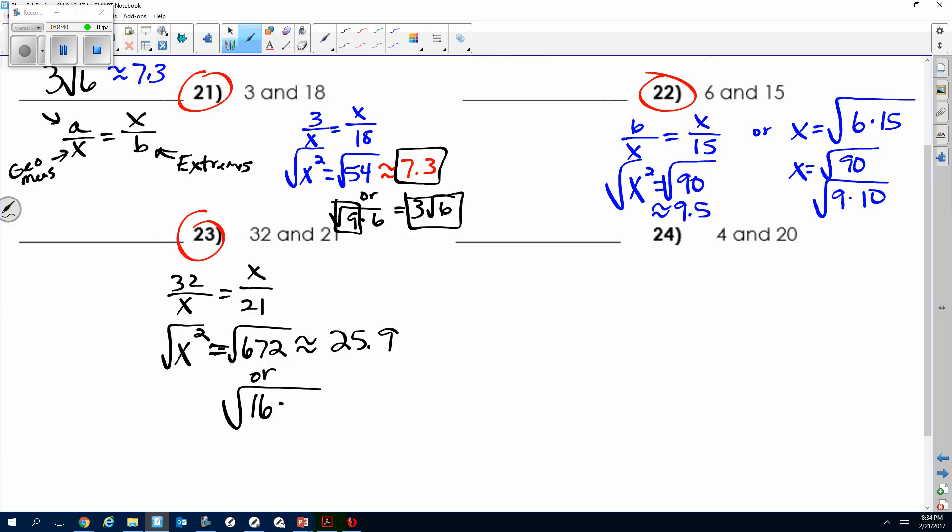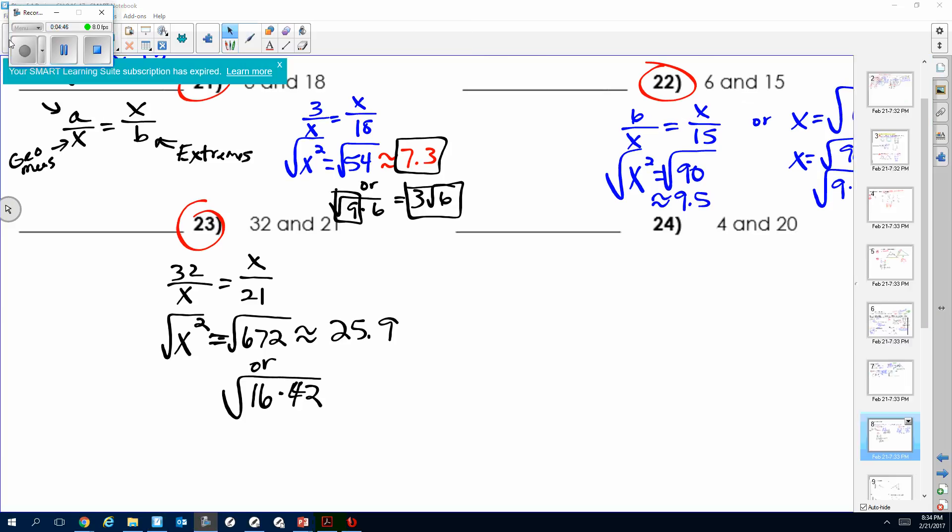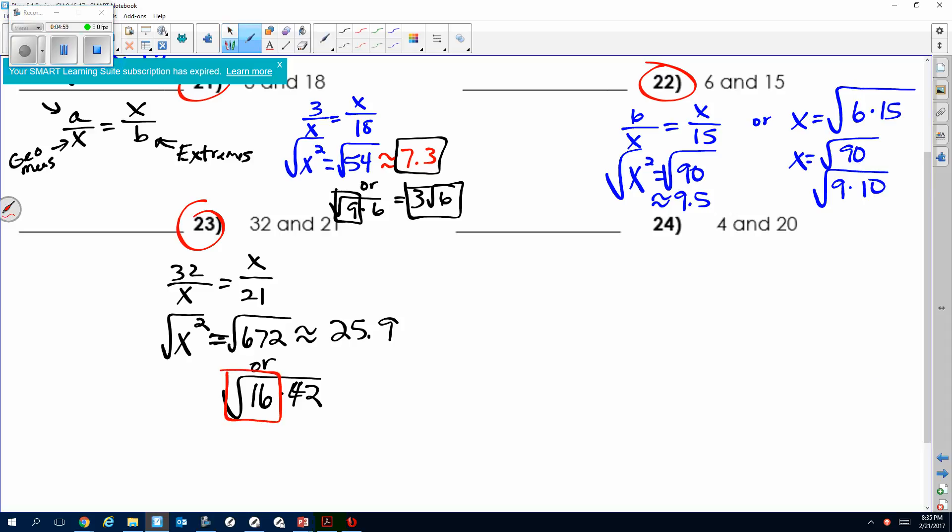Well, I can do 16 times 42. Sorry, 16 times 14. Sorry about the technical difficulties. 16 we know is a perfect square. The square root of 16—that's the perfect square—is 4. And then we just keep the 42.